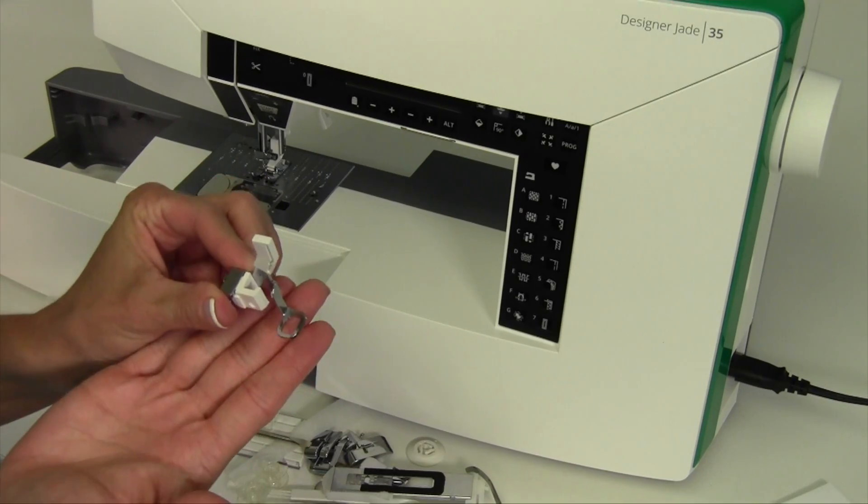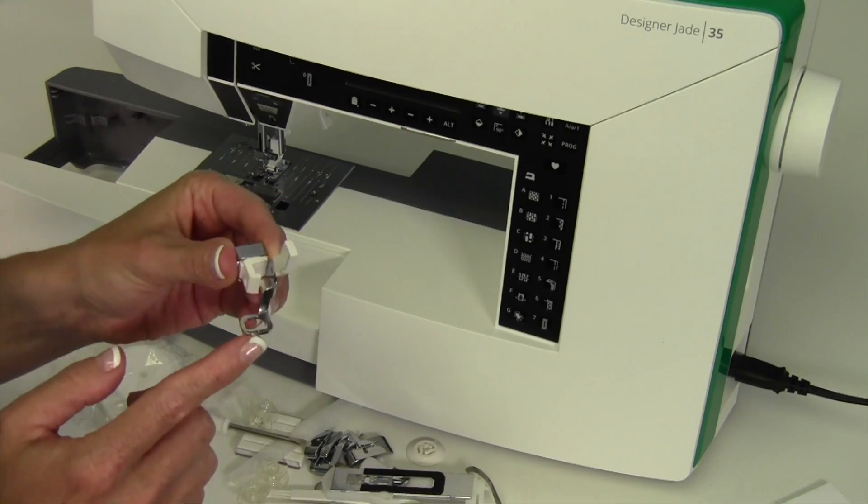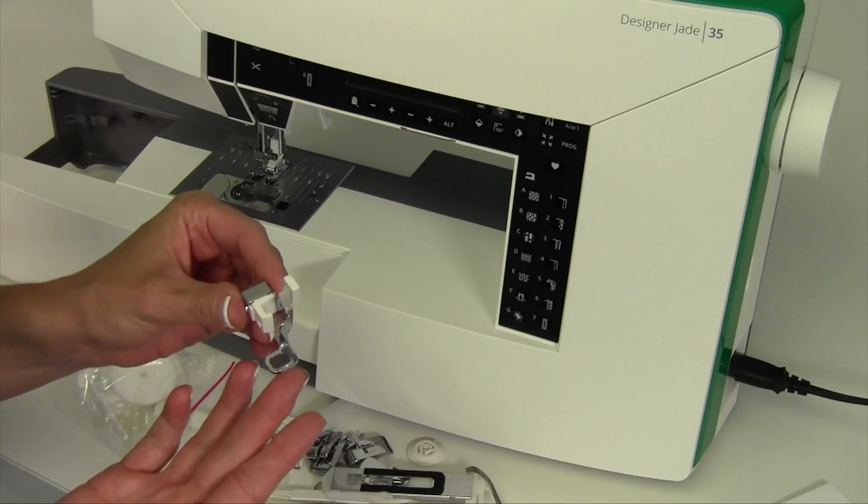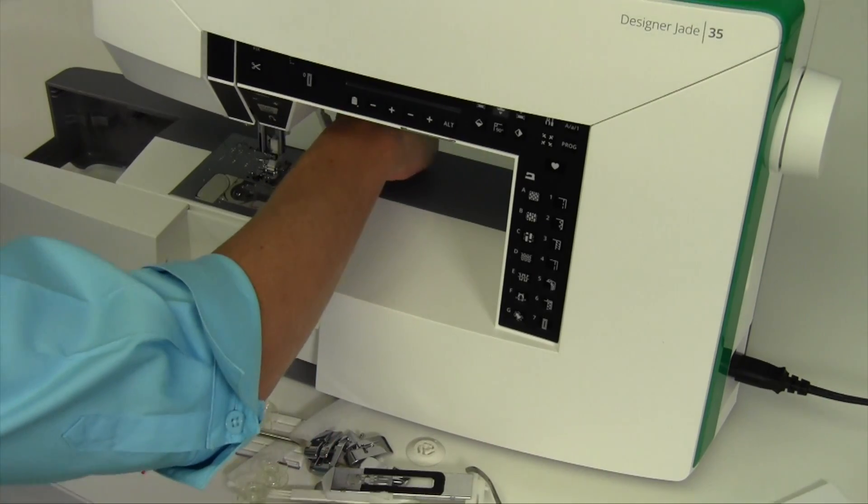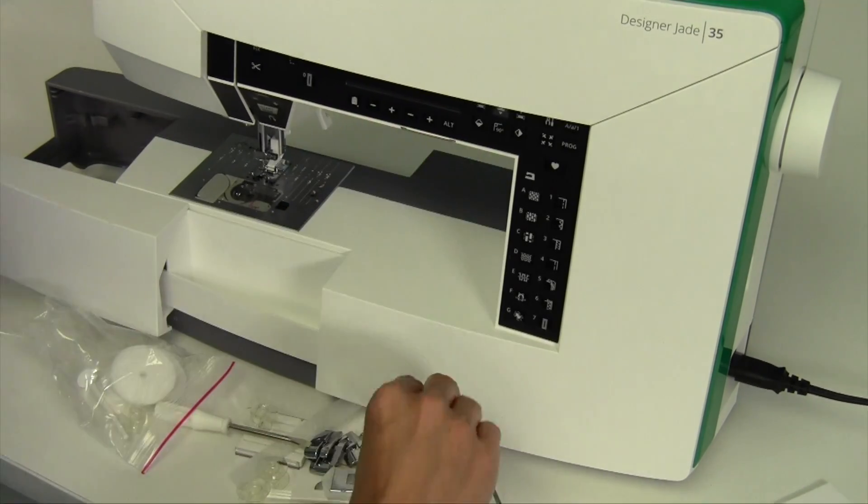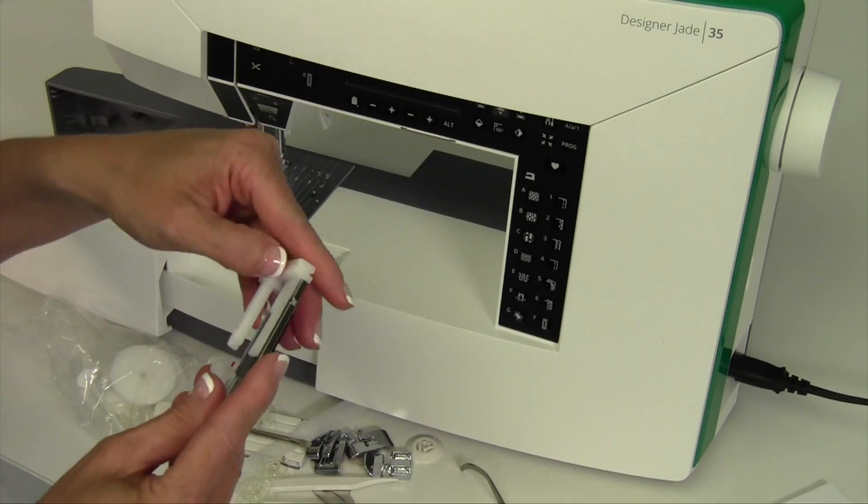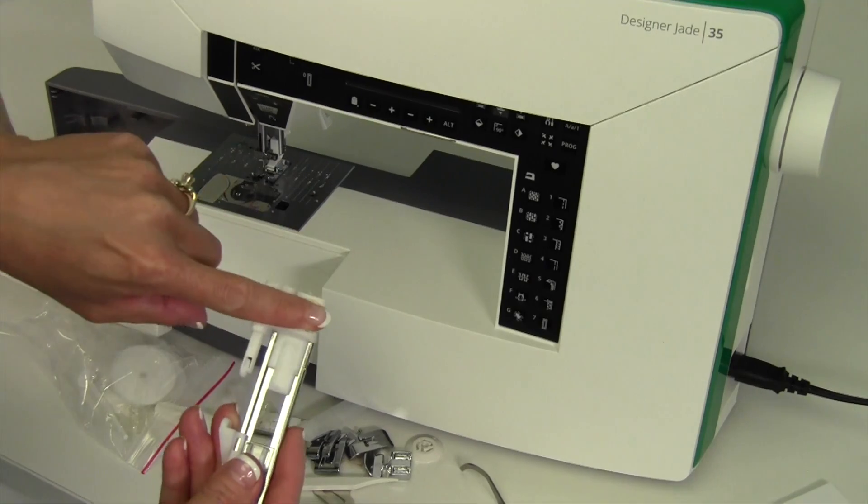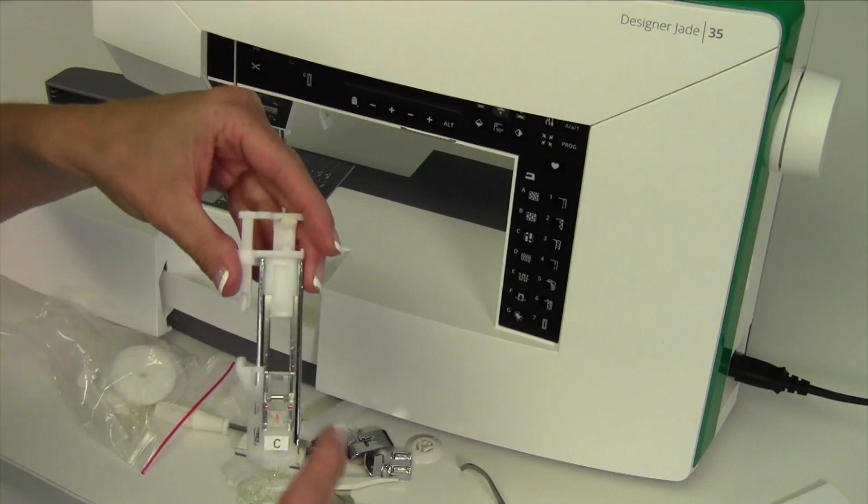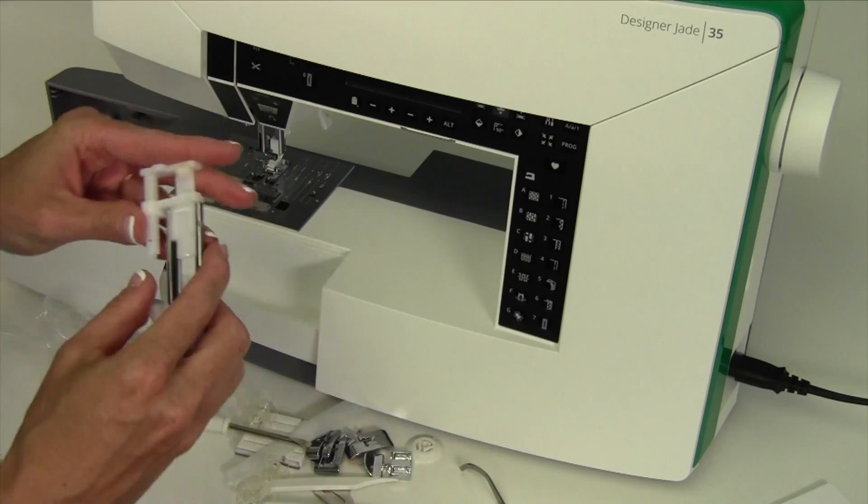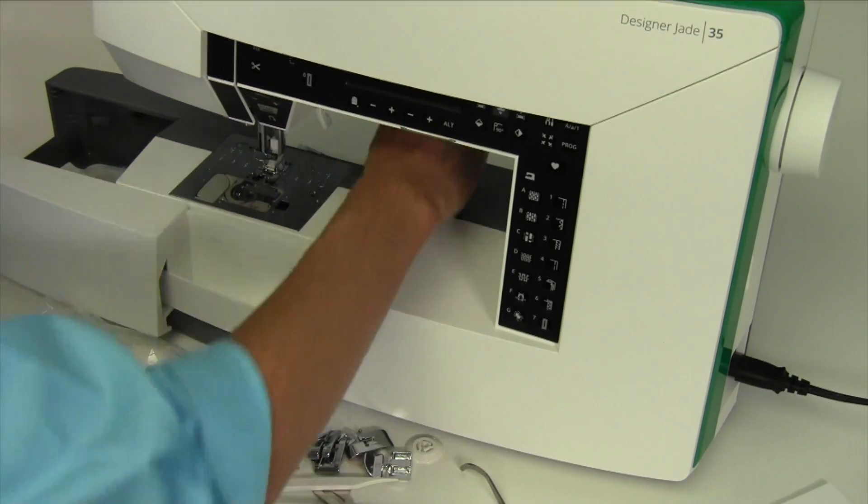This is your embroidery foot so you can use that to do embroidery. It actually can also be used for doing free motion quilting as well. The other thing I'm going to put in the back is the buttonhole foot. This is where you can actually put a button right here in the back. It will measure out the size of the button and just do buttonhole after buttonhole. Love that feature.